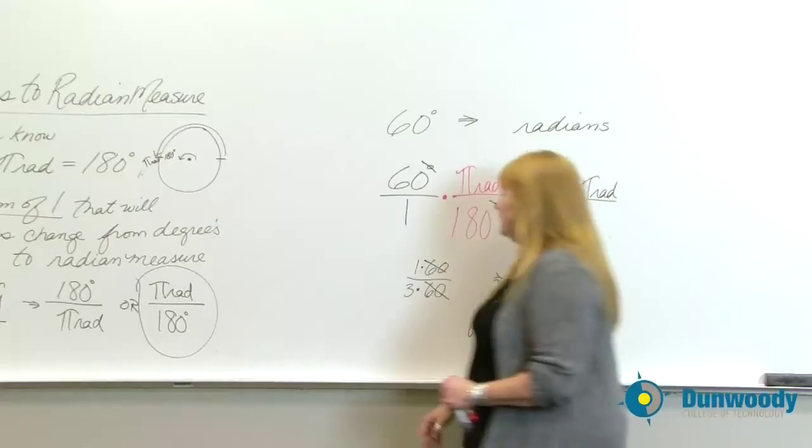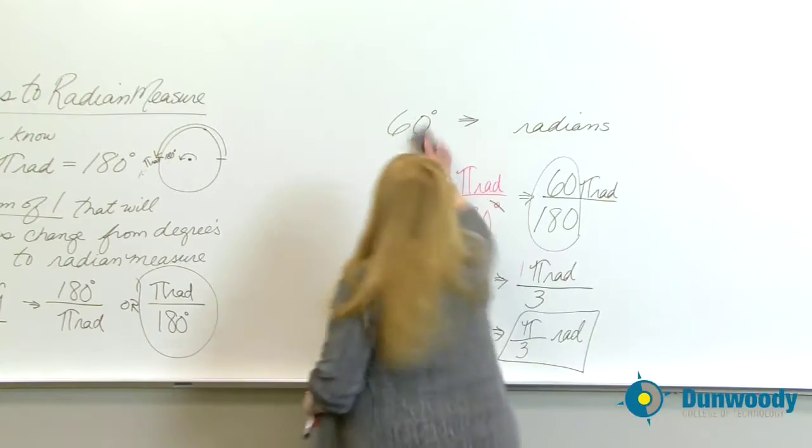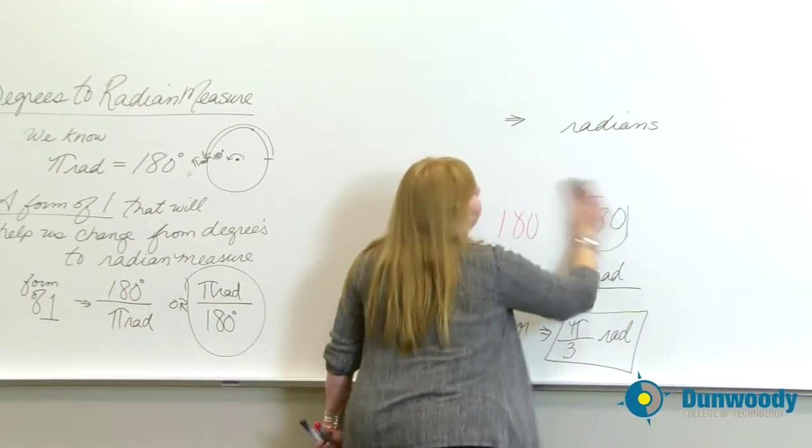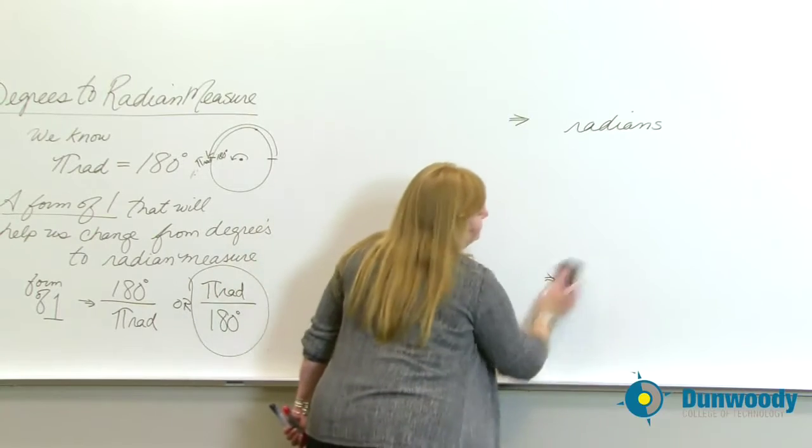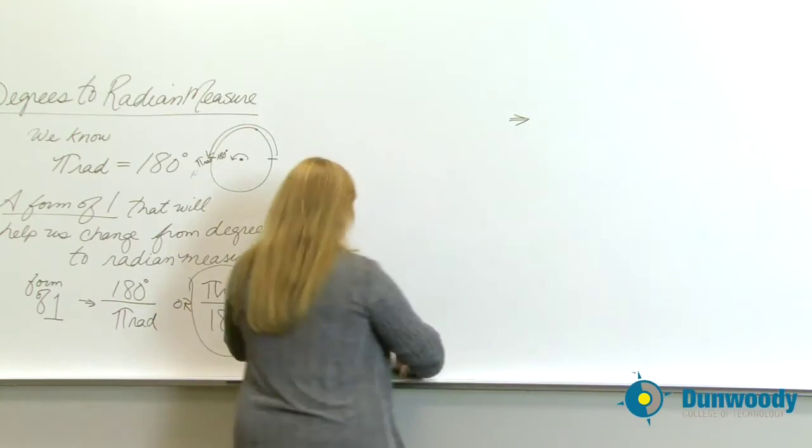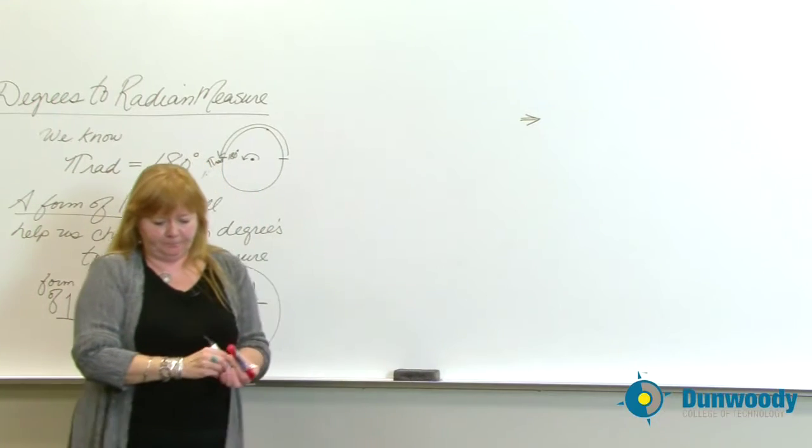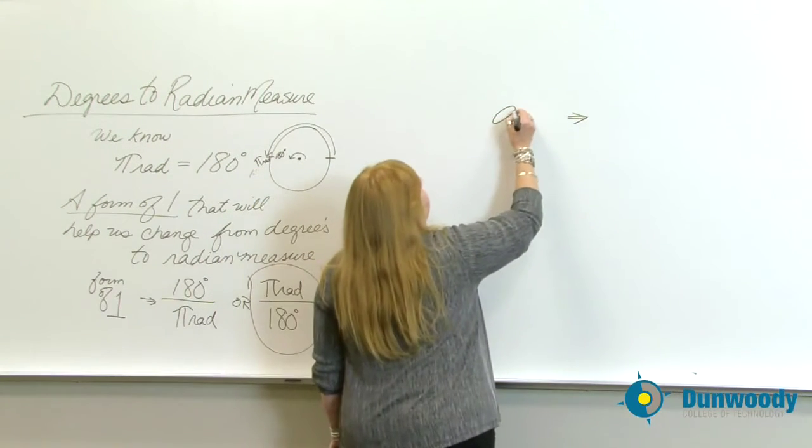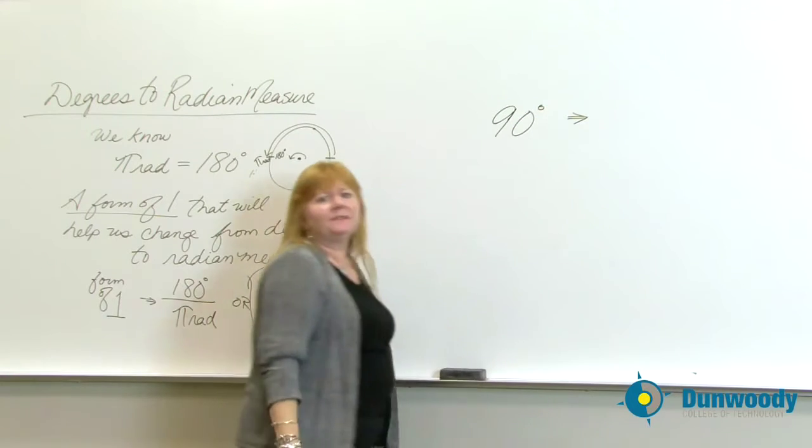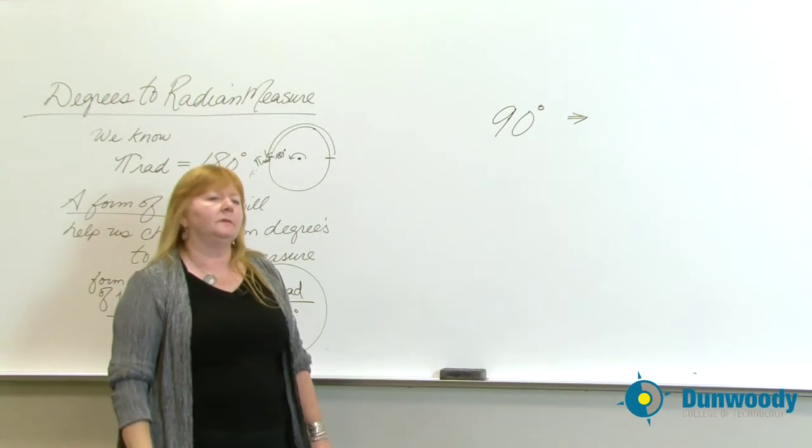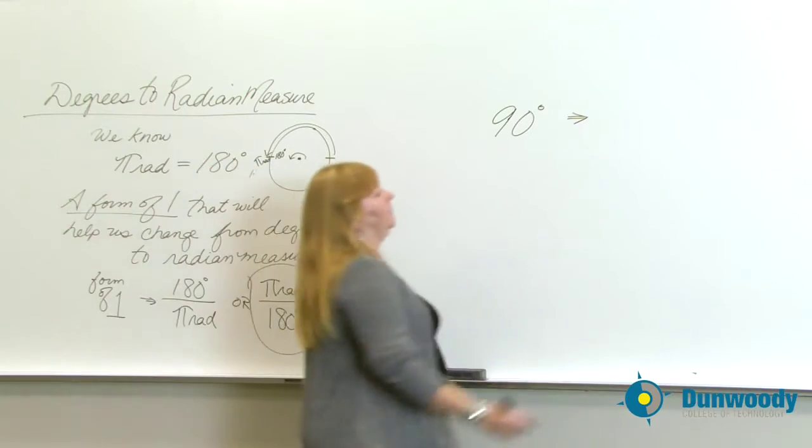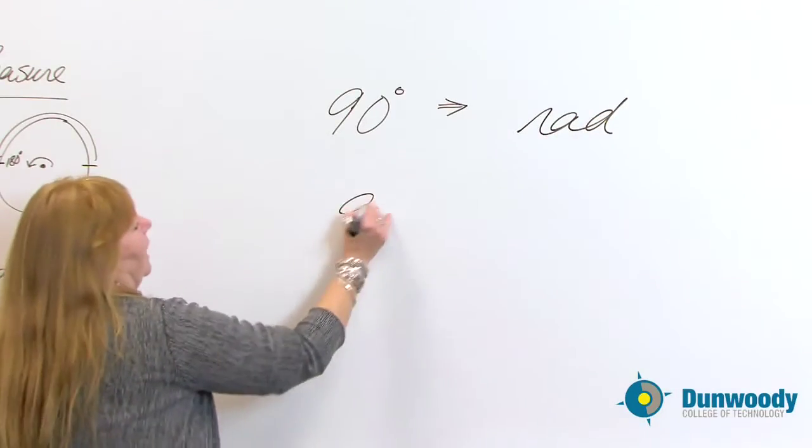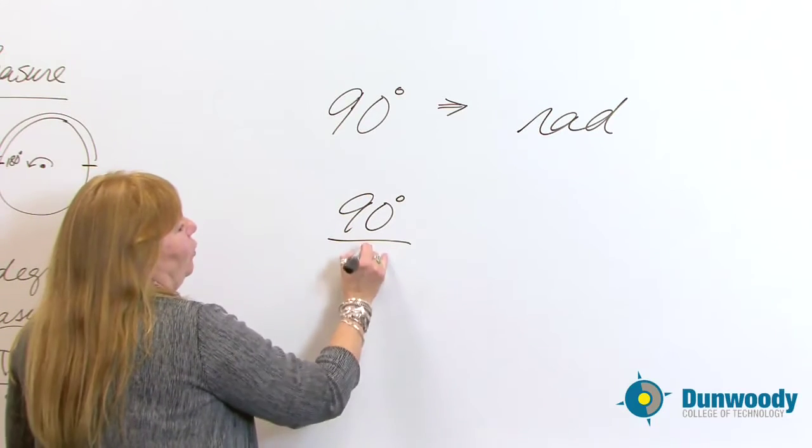Let's do another one, because I think a couple of examples helps you understand things. You need to get into a habit of really understanding your math and showing yourself what's going on. Show yourself units of measure canceling. How about if we take 90 degrees, 90 degrees into radian measure.